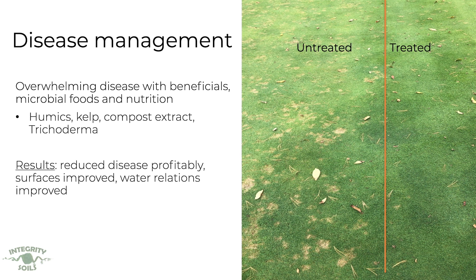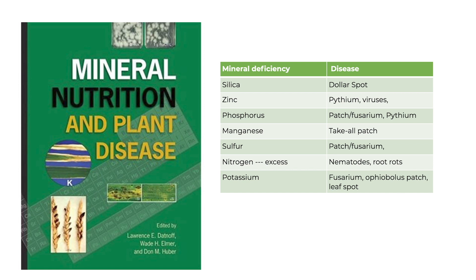On the left hand side we have a lot of disease pressures, and on the right hand side you can see the line where the spray went — we aren't seeing those same disease pressures. As a result we can profitably reduce disease pressures, we see an improvement in those surfaces, and water relations are also going to improve. Get really curious about what a specific disease may be indicating to you. There's a really good book called Mineral Nutrition and Plant Disease — take a look at that one, it actually pulls apart what kind of mineral deficiencies relate to what kind of diseases.